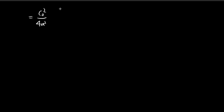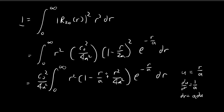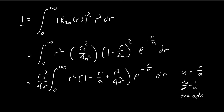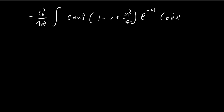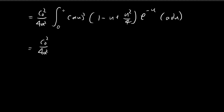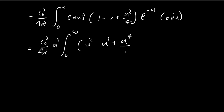Moving on to the next page, by applying the substitution u = r/a, we rewrite the integral. r² becomes a²u², the polynomial becomes 1 minus u plus u²/4, the exponential becomes e to the power of negative u, and dr becomes a du. Note that when r = 0, u = 0, and when r = infinity, u = infinity, so the bounds remain 0 to infinity. We pull out a³ and distribute u² inside the bracket.